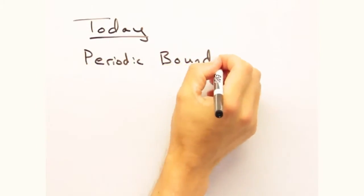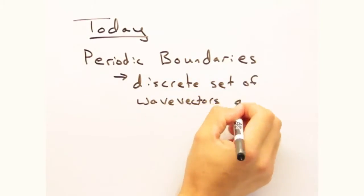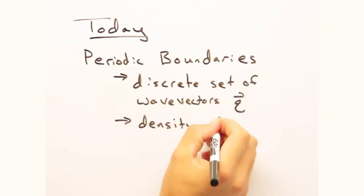Instead, our goal today is to treat finite solids as periodic structures macroscopically, use that to explain the discreteness of our Q vectors, and introduce a term called the density of states and explore its implications.